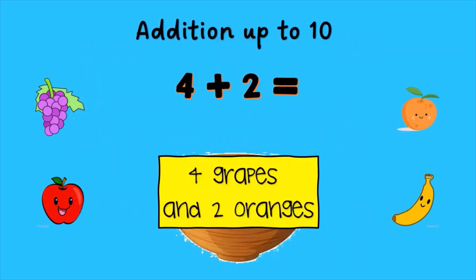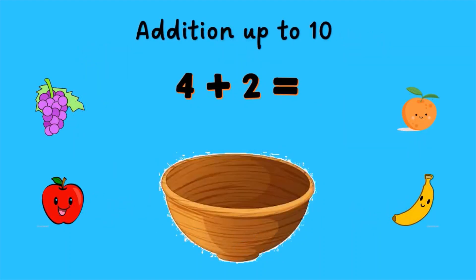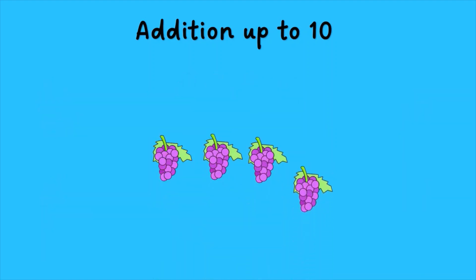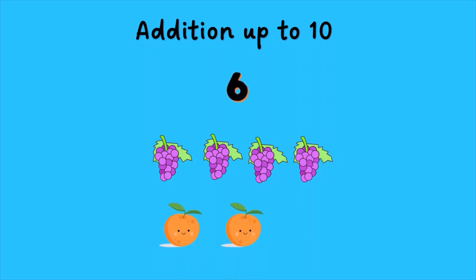Four grapes and two oranges. One, two, three, four, five, six. The sum is six.